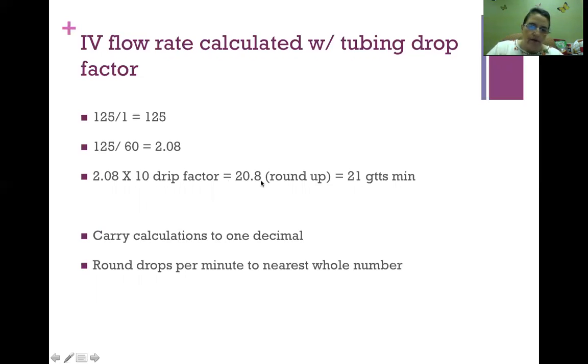0.8 is above 5, so we're going to round up, and that is 21 drops per minute. That's how you calculate a flow rate with tubing drop factor. Make sure we carry calculations to one decimal and then round up, and round up drops per minute to the nearest whole number. You cannot calculate a manual 20.8 drops, and you also cannot plug that rate into a smart pump. You have to put a whole number into a smart pump.